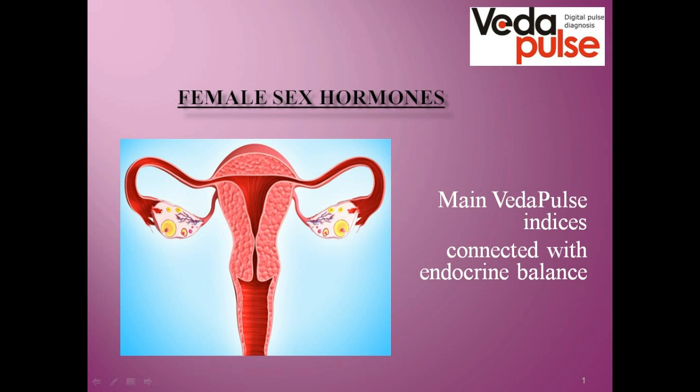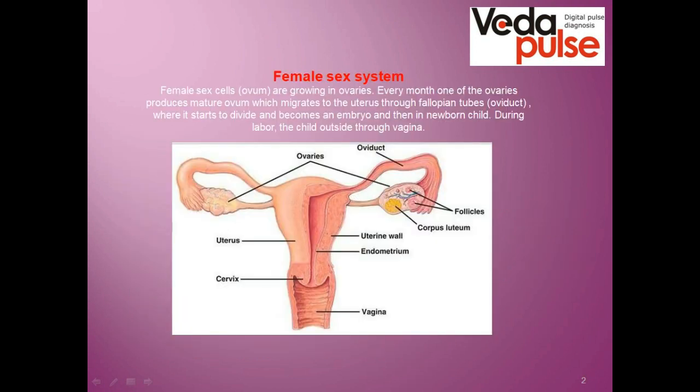Before talking about its functions, let's first look at the anatomy of the female endocrine system. The female sex system consists of ovaries, which are glands of mixed secretion, then fallopian tubes, uterus, vagina, and external sex organs. Ovaries are called mixed secretion because on one hand they perform an endocrine function, and on the other, exocrine. The endocrine function is connected with production of female sex hormones, and exocrine is responsible for the egg cell or ovum.